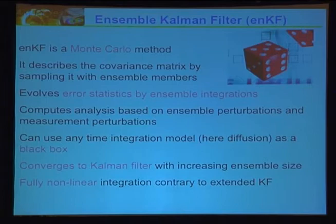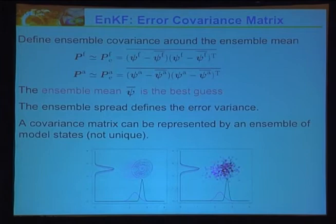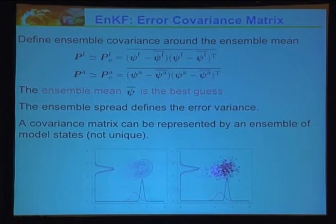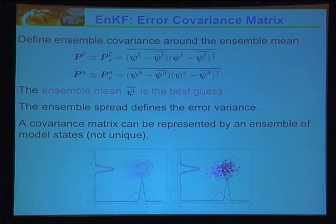The covariance matrix approximation is simple: it's each ensemble member minus the average, then the outer product, which gives you a matrix. One main thing to notice is that since you have only a finite size ensemble, this approximation may not be optimal. As you implement ensemble-based methods, the most important thing is this approximation of the covariance matrix. If you have a system of 30 million variables and only 30 ensemble members, your covariance matrix will contain various deficiencies. You must be careful about ensemble size, spread, and how much you trust that covariance matrix.